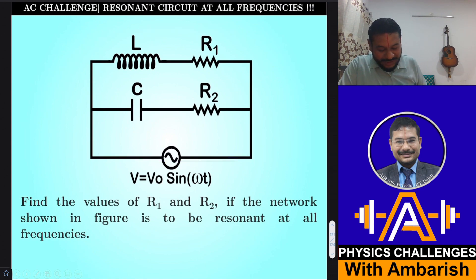And I want the value of R1 and R2 so that the circuit is resonant at all frequencies. So what do we mean by resonance? In the context of JE, we always mean that resonance means that generator current and generator voltage are in same phase.